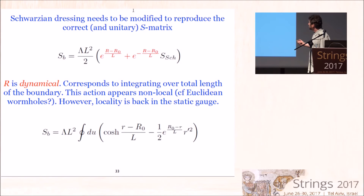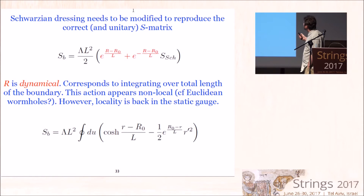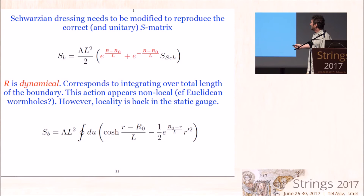This additional integration looks a bit non-local and reminiscent of what one expects from Euclidean wormholes — the coupling constant becomes dynamical. But one can use a different gauge, the static gauge, where the action is completely local, and imposing the constraint that the circle size is fixed is an non-local operation, but one checks that in this gauge one gets the same answer for the flat space S-matrix.